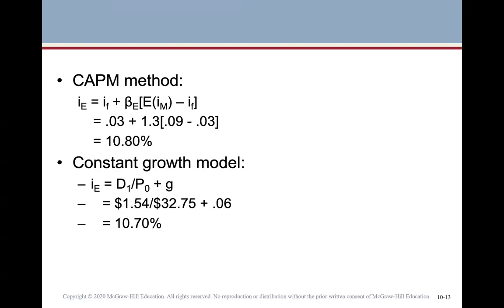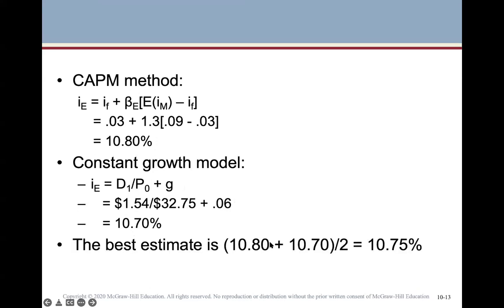Using the constant growth model: cost of equity = D1 / P0 + g = $1.54 / $32.75 + 6% = 10.7%. We then average the two estimates: (10.8% + 10.7%) / 2 = 10.75%, which is our best estimate for the cost of common equity for ADK.